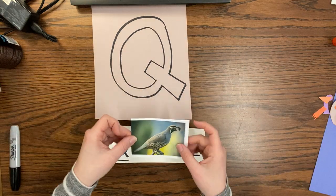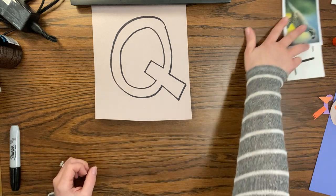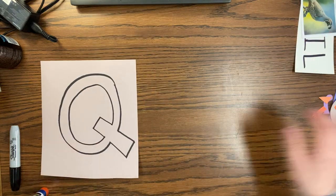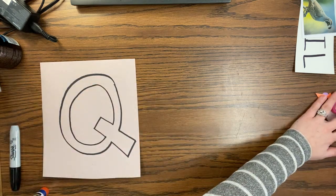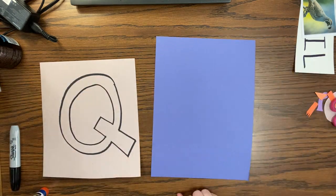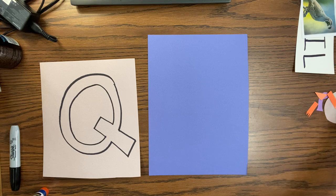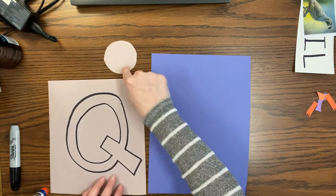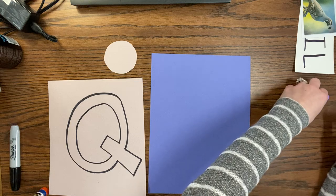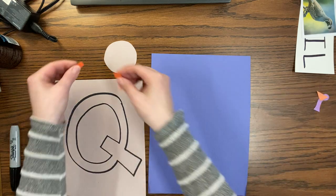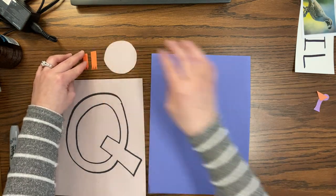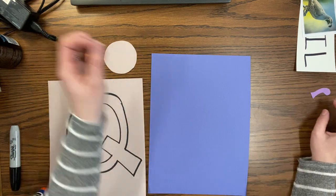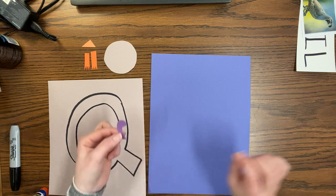All right, are you ready? What you will need is this: your uppercase Q, your blank piece of paper, your circle, your two orange, your orange triangle, and your purple.